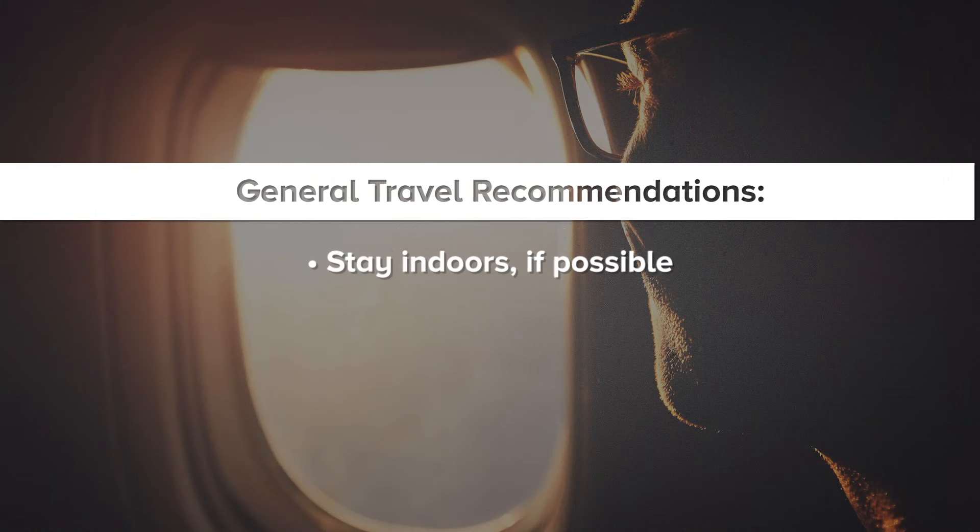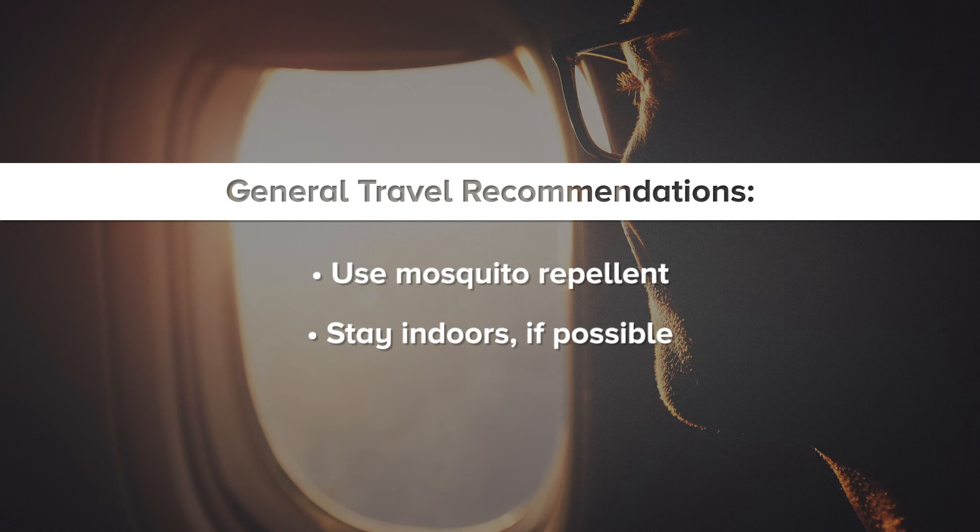If you are planning to travel to a place that is endemic, there are some general recommendations that can help you. Some of the basic ones are to use an appropriate mosquito repellent, and one of those is those containing DEET, but there are others and you can look that up on the CDC website. Knowing about it is the best way to protect yourself, so hopefully this video can help people understand what they can do and in what situations they should be more concerned.